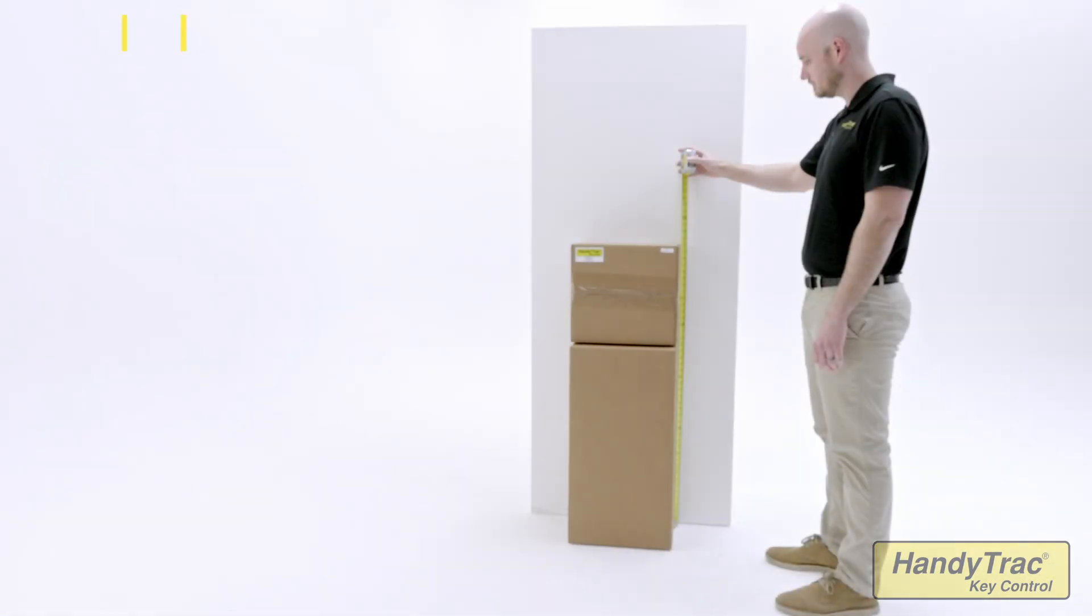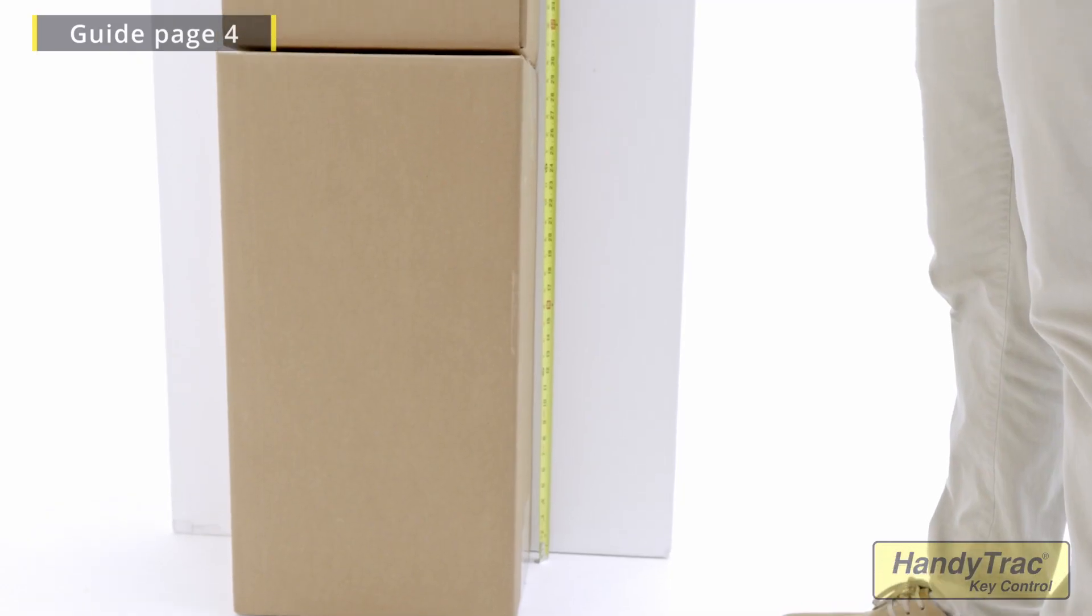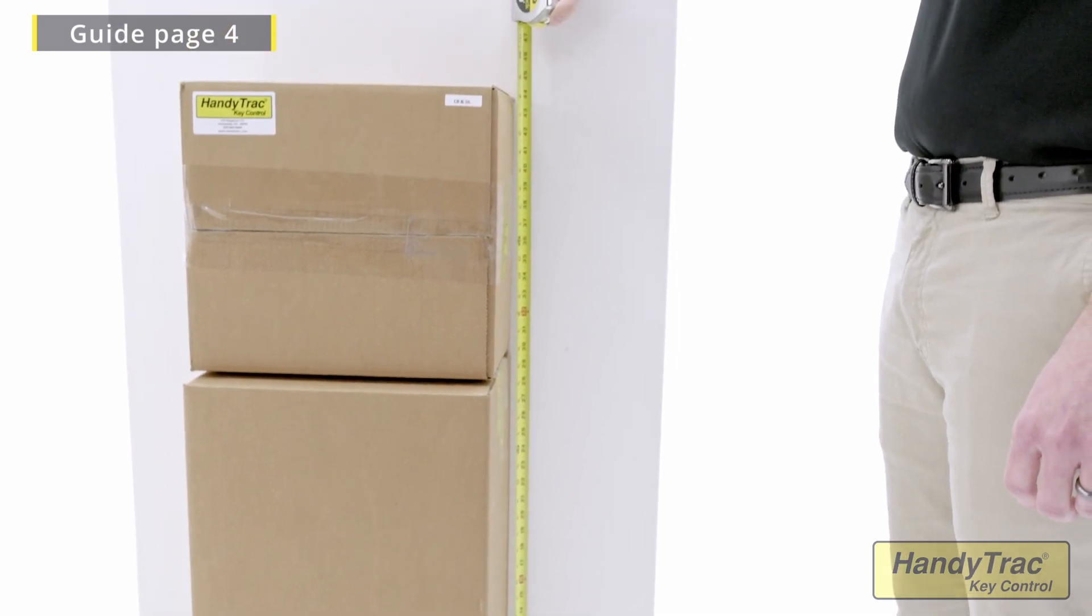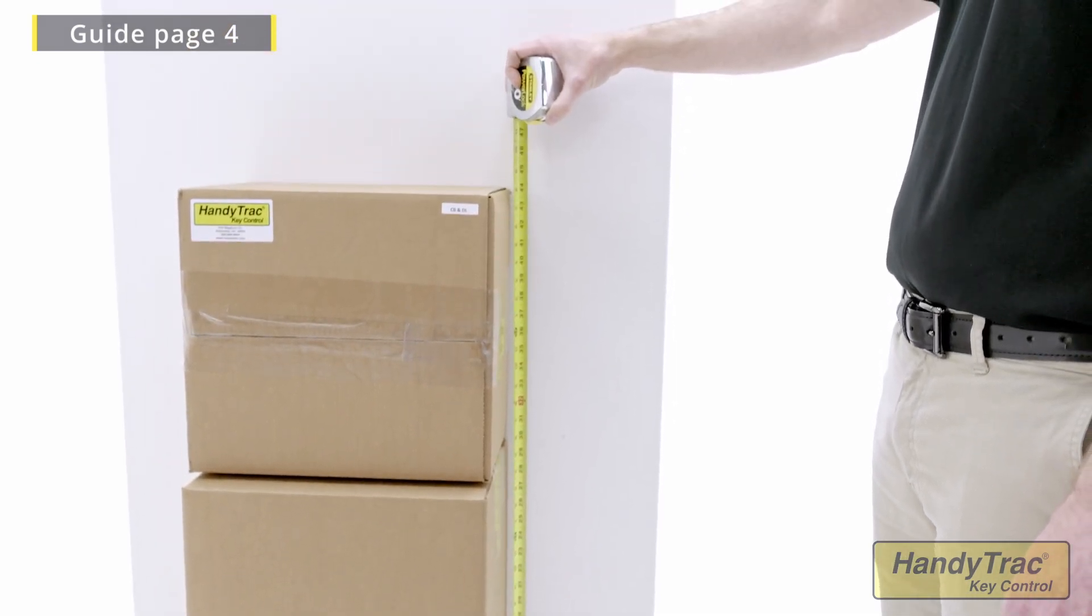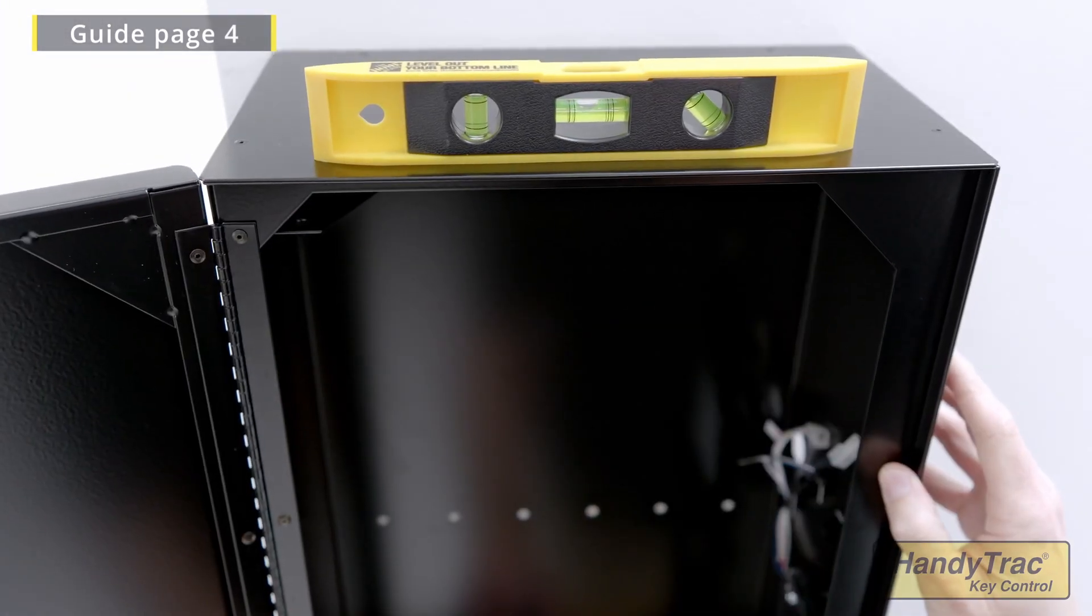Your cabinet should be installed with the bottom being 44 inches from the floor. When possible, stack the two boxes your cabinet and control box came in. They will give you the height you need and provide support for ease of installation. Next, level the cabinet.